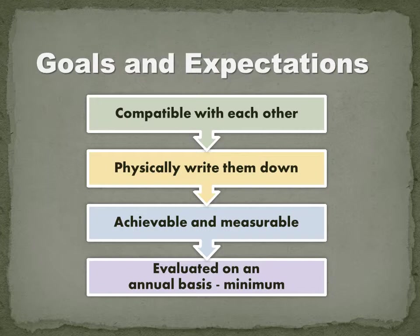Goals need to be achievable and measurable. If I said I wanted to sell 20,000 pounds of tomatoes a year, that's measurable — it's easy to weigh tomatoes — but is it achievable and evaluable on an annual basis? If your goal is to have a one-acre vegetable production garden, at the end of the year you evaluate: was it successful? Do you need a larger or smaller garden? It's time to get busy and start thinking about these items.